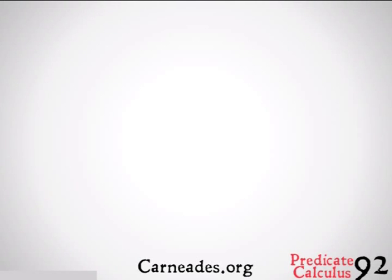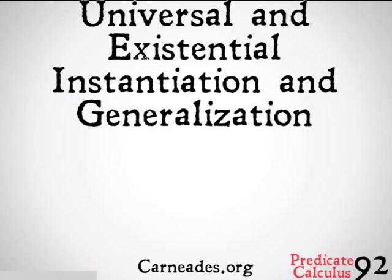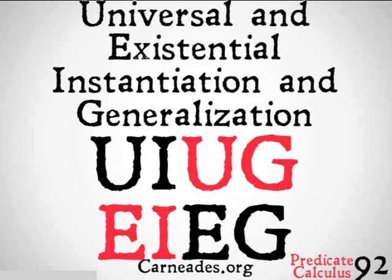Welcome back to 100 Days of Logic with Carnetis.org. Today we are going to be continuing our final 10 days of logic, looking at predicate calculus, looking at universal and existential instantiation and generalization. These are the ways we're going to represent or abbreviate these four new rules that we will be adding to our rules of inference for propositional logic that will help us deal with categorical statements as well.